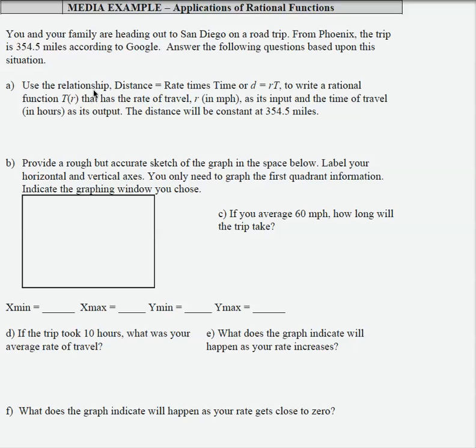In the first part of this problem we're asked, given the relationship distance equals rate times time, write a rational function t of r that has the rate of travel r as its input, and the time of travel t as its output. Distance is constant. That's a lot of words to say really what is a very simple thing.